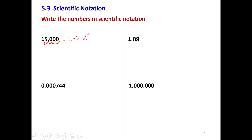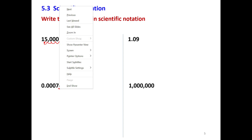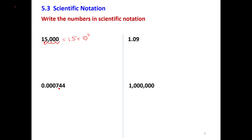Let's check the next one. We know this number is less than 1, so the exponent of 10 must be negative. We want the decimal point here so the number is between 1 and 10. We count how many places: 1, 2, 3, 4. The answer is 7.44 times 10 to the power of minus 4.